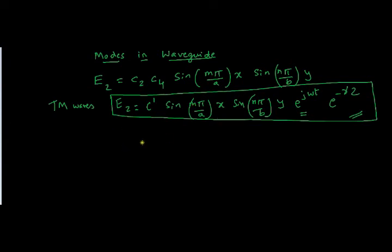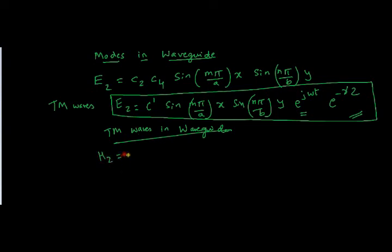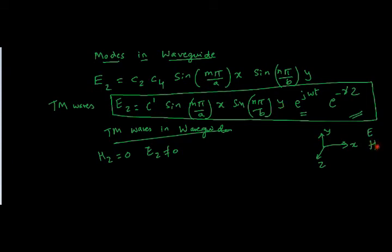Since we were dealing with TM waves in a waveguide, what is the minimum requirement for TM waves? The value of Hz should be equal to 0 and Ez is not equal to 0. So there are three directions: x, y and z. For TM waves only Hz is equal to 0, however the fields exist for x and y direction.